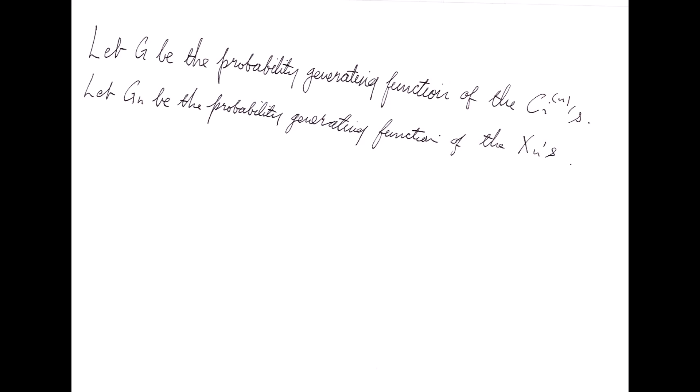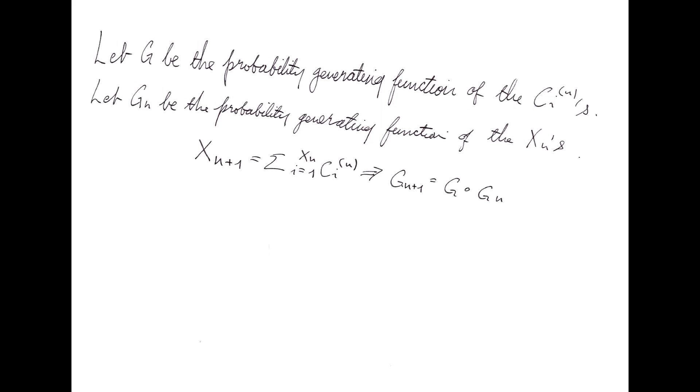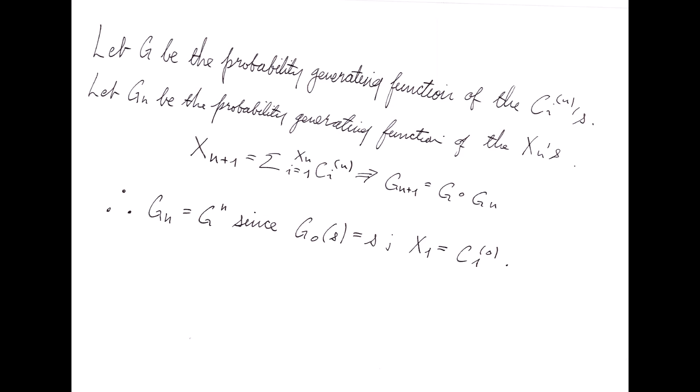So we can let g be the probability generating function of the offspring of a single member. Let us denote by gn the probability generating function of xn. We know that xn plus 1 is just the sum of xn iid random variables representing the offspring of individual members, so we can just write gn plus 1 of s equals gn of gs using our previous result. Moreover, by induction and reshuffling the gs, we've got gn plus 1 of s equals g of gn of s, so gn was just the nth power of g all along.